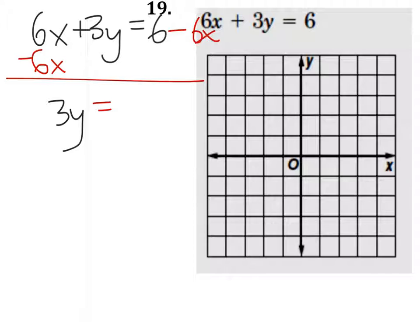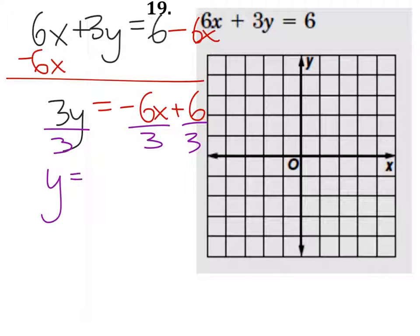But it equals, I'm just going to exchange those, negative 6x plus 6. Then I'll divide both sides by 3, and we get y equals negative 2x plus 2.